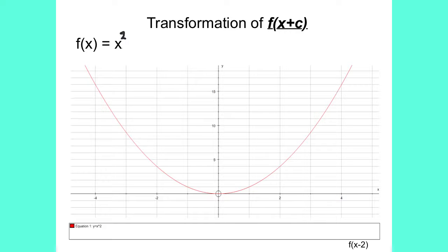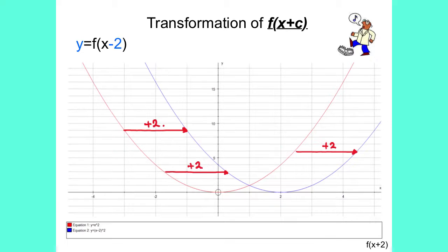The third type of transformation is f brackets x plus c. So if we draw the graph of f of x equals x squared, if we now draw the graph of y equals f of x minus 2, you can see that the graph has been moved to the right by two spaces. It is moved in the opposite direction — instead of going in the negative direction, it goes in the positive direction two spaces. So the point 0, 0 becomes the point 2, 0.